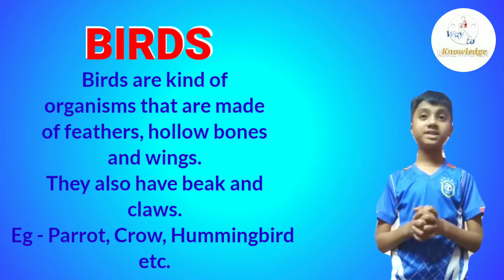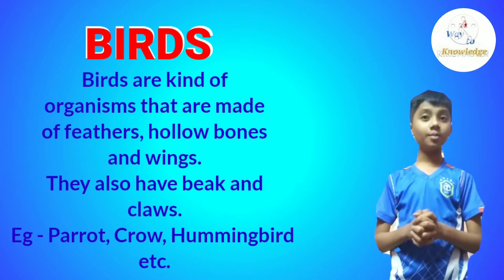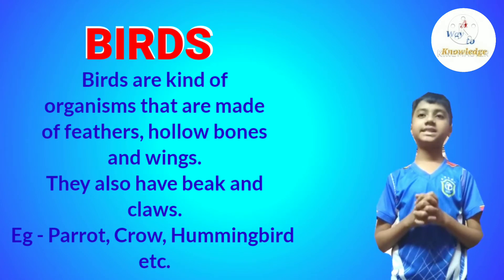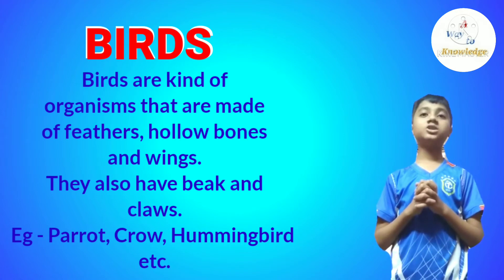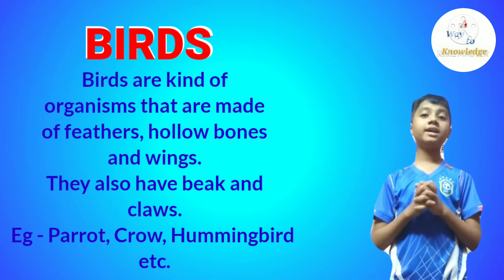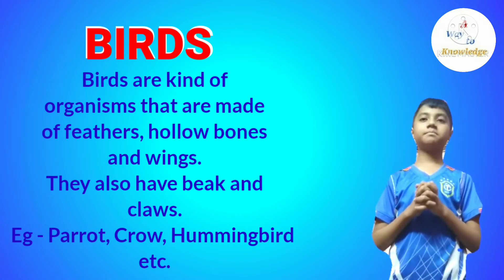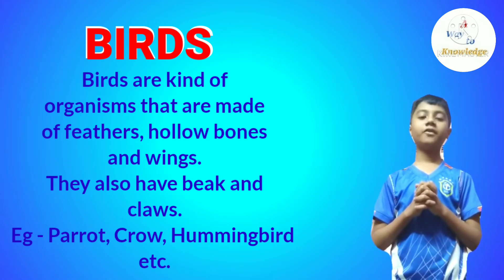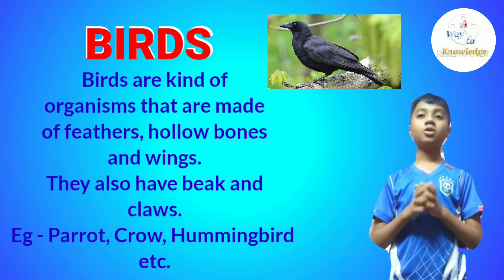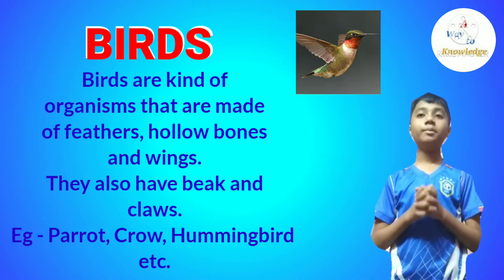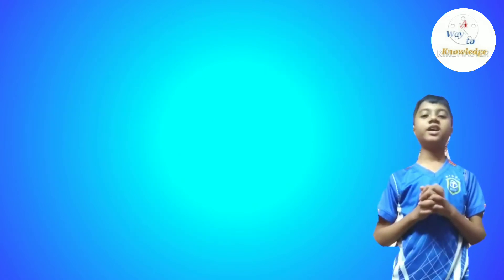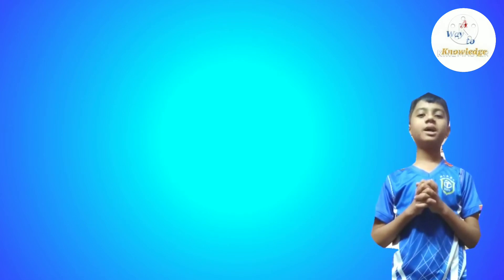Birds are a kind of organism that are made of feathers, hollow bones, and wings. They also have a beak and claws. For example, parrot, crow, hummingbird, etc.